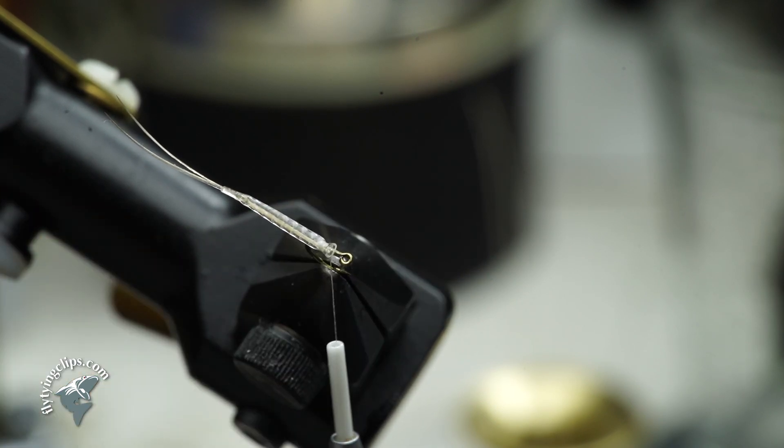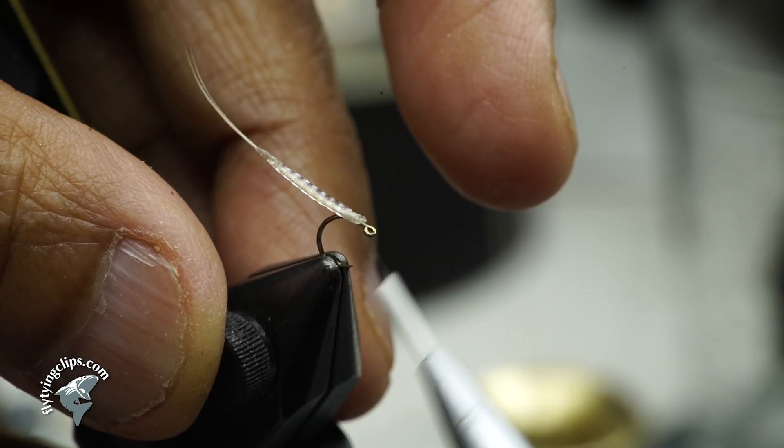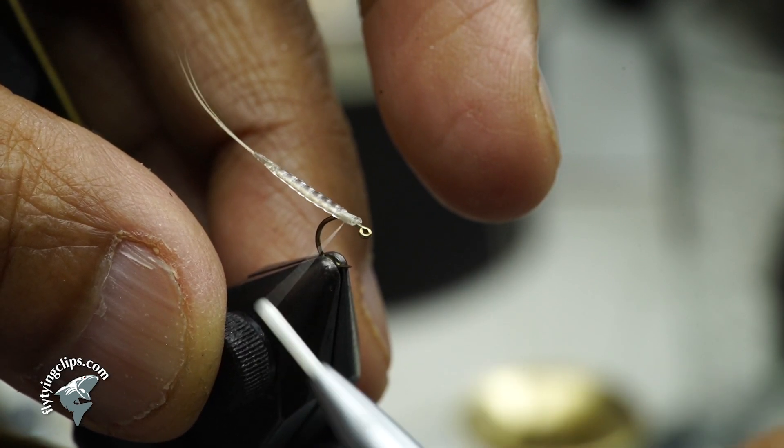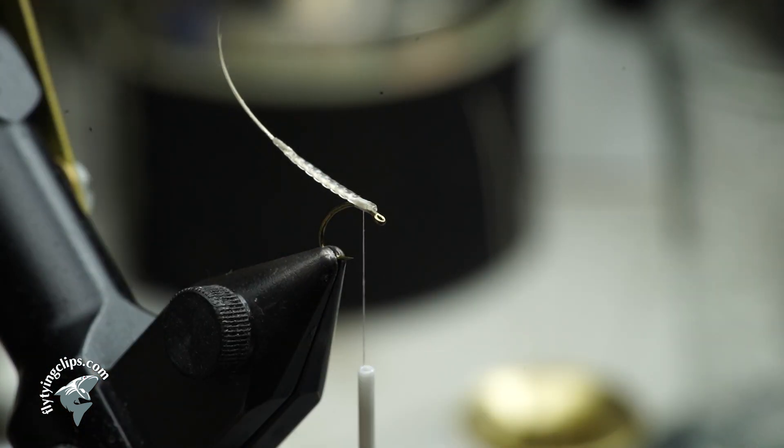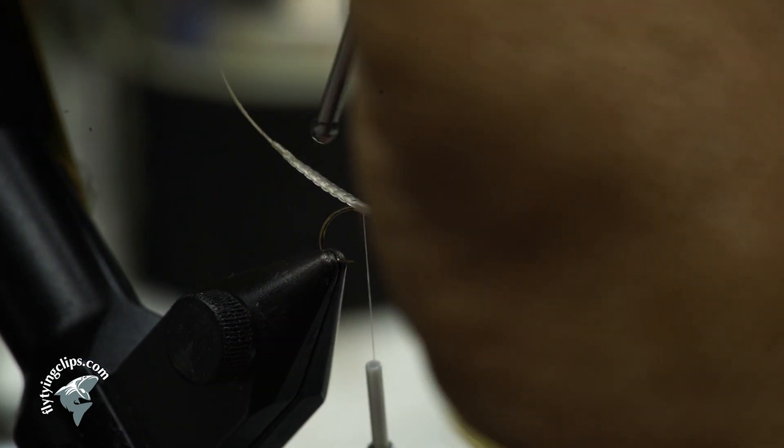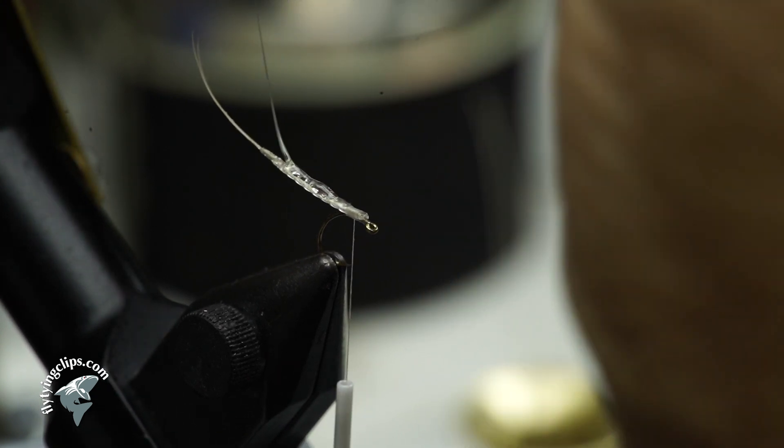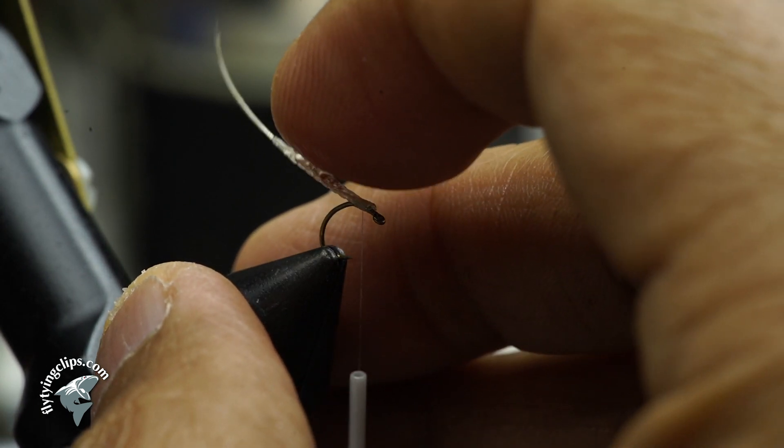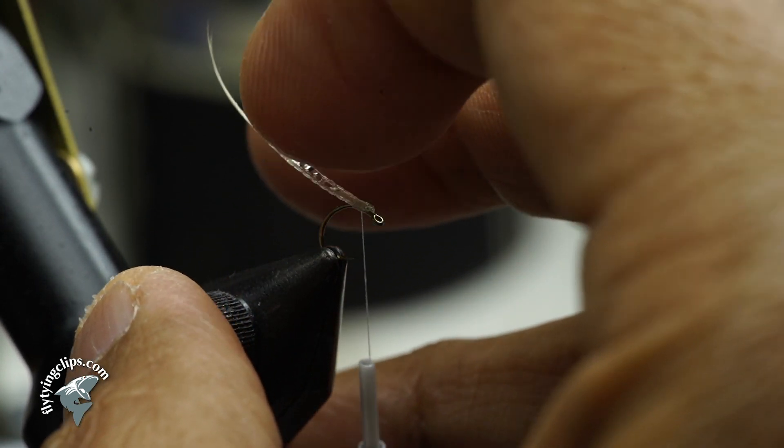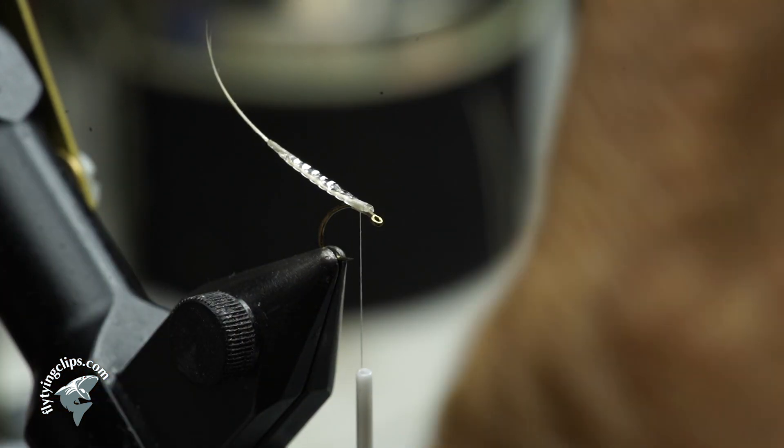Now depending on who you are and what you like, for some people this is sufficient. But some of us like a little bit more uplifted abdomen. So what I'm going to do is take some UV resin, just normal UV resin. Spread it along the top. It also enhances the segmentation of the extended body. And then I'm going to bend it into the shape of a little bit more uplifted abdomen.